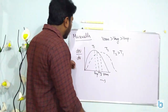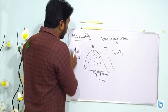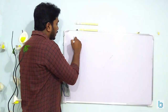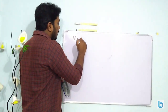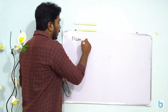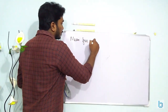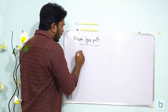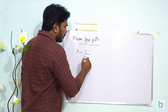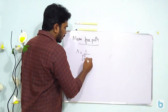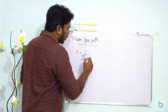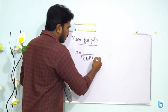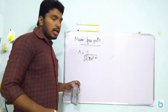Another important term is mean free path λ. The mean free path is given by λ = 1/(√2 × π × d² × N), where d is the diameter of the gas molecule and N is the number of molecules per unit volume.